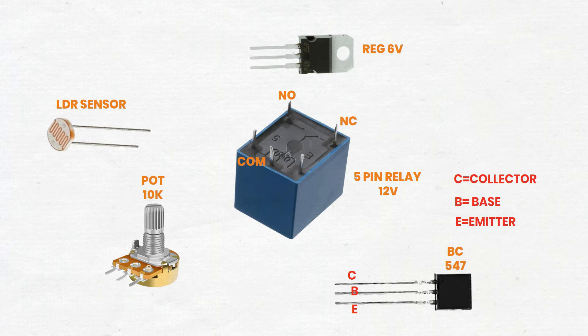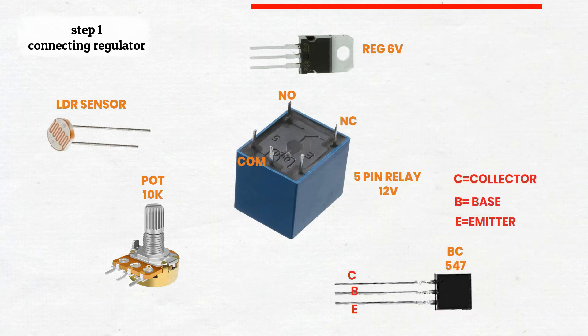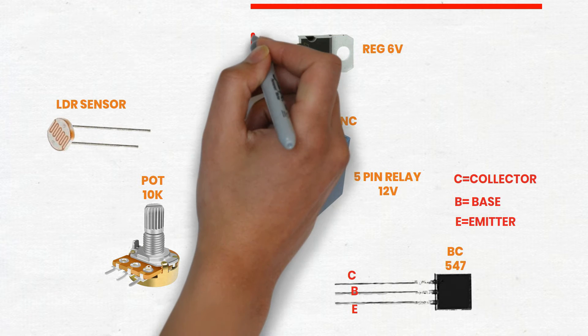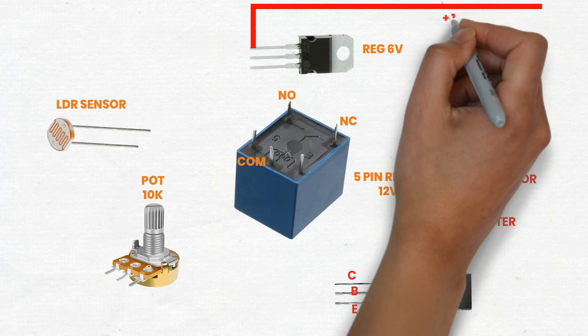Step 1. Connecting the voltage regulator. Voltage regulator Pin 1 Input: connect to the positive terminal of your power source.